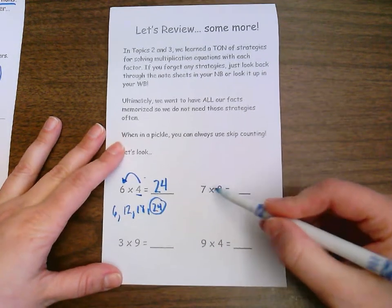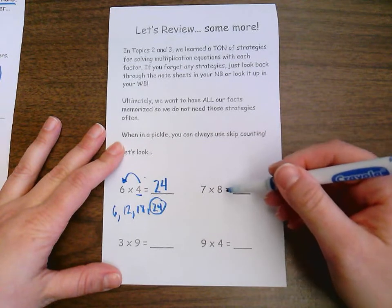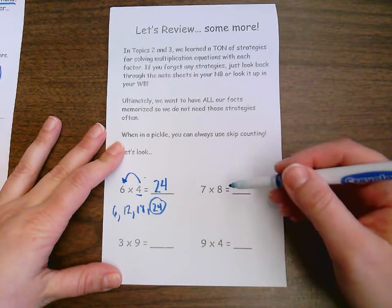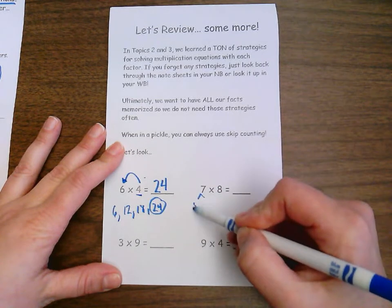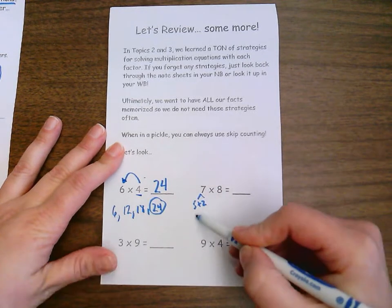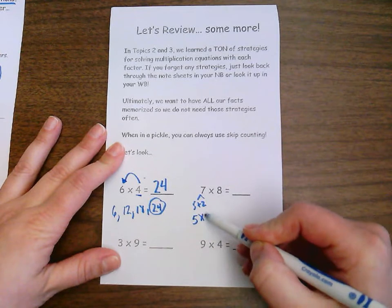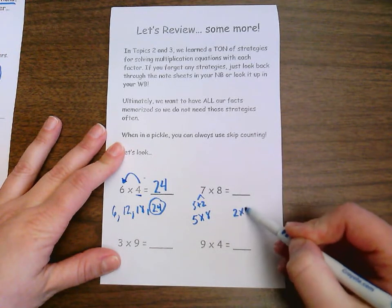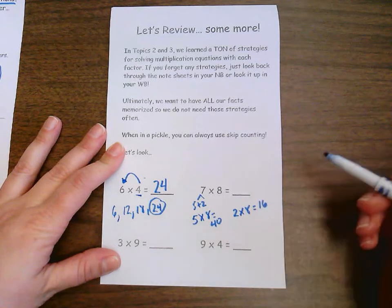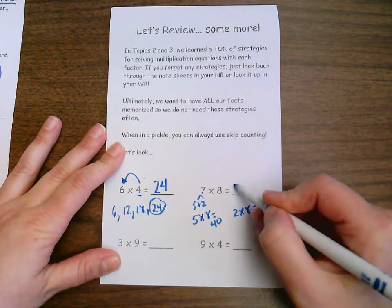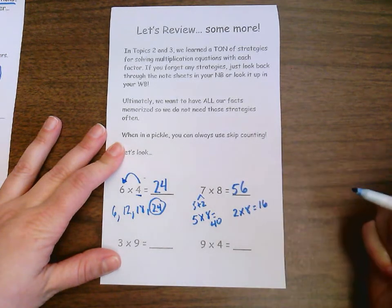Over here, I've got a seven and an eight. I could use my eight strategy, which would be double, double, double, or I can use my seven strategy, which is think of the seven as a five and a two. That's the strategy I'm going to go with. So five times eight and two times eight. I know five times eight equals 40 and two times eight equals 16. And when I add those two together, I'm going to get a total of 56.